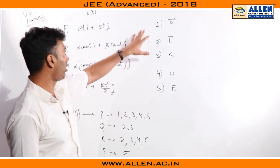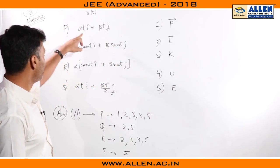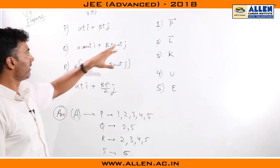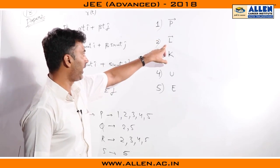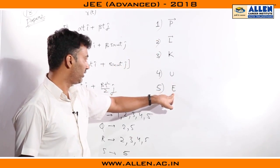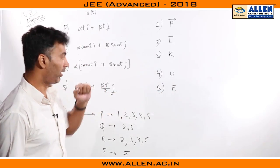Question 18 paper 2. We had 2 columns, we had to match them up. These were the possible position vectors for the particle and here we had 5 physical quantities: momentum, angular momentum about origin, kinetic energy, potential energy, and total mechanical energy.